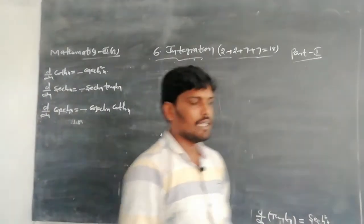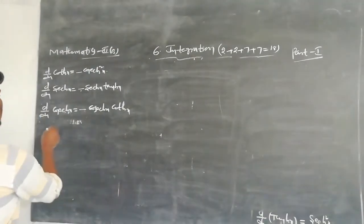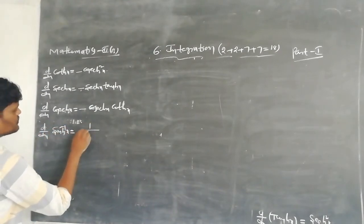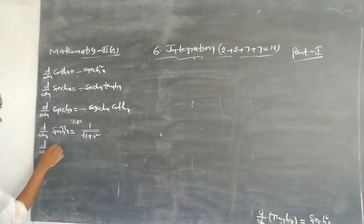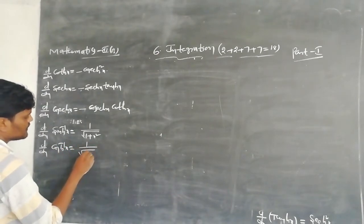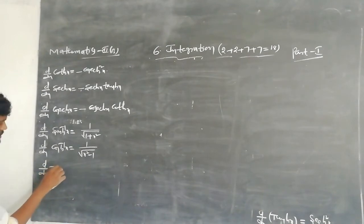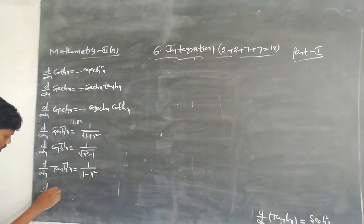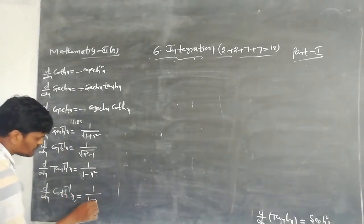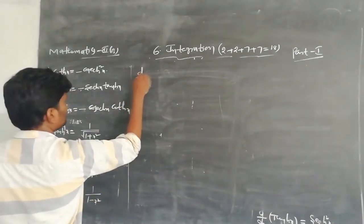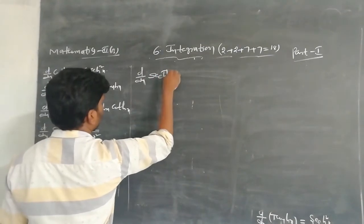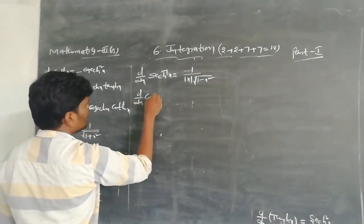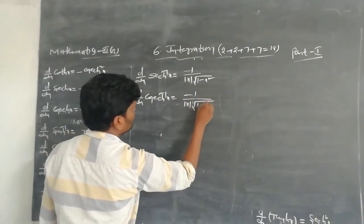Next, inverse hyperbolic trigonometry. Derivative of sinh⁻¹x = 1/√(1+x²). Derivative of cosh⁻¹x = 1/√(x²−1). Derivative of tanh⁻¹x = 1/(1−x²). Derivative of coth⁻¹x is same form as tanh⁻¹x derivative. Derivative of sech⁻¹x = −1/(|x|·√(1−x²)). Derivative of cosech⁻¹x = −1/(|x|·√(1+x²)).